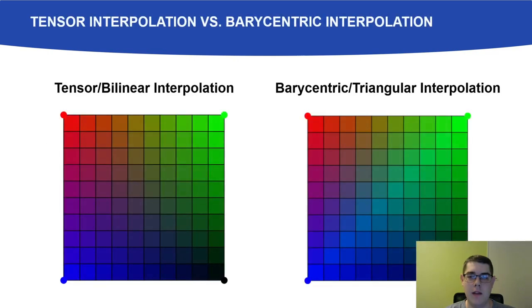The 2D analog for tetrahedral interpolation is barycentric interpolation in triangles. Compared to tensor interpolation, which is also called bilinear or trilinear interpolation in 2 and 3 dimensions, the effect of individual samples are more pronounced since fewer samples are used for reconstruction. The noticeable diagonal is not unique to barycentric interpolation.